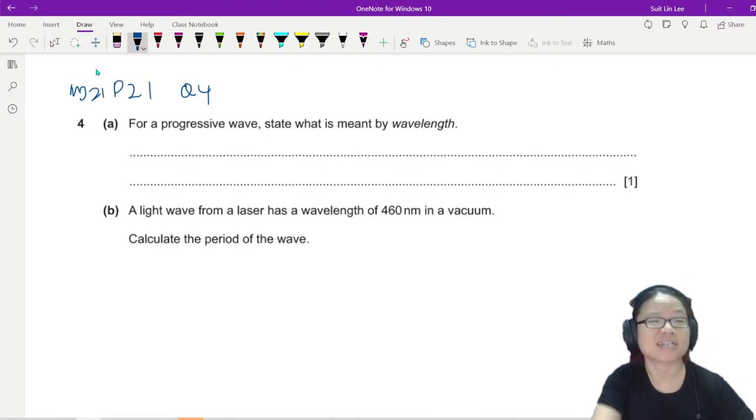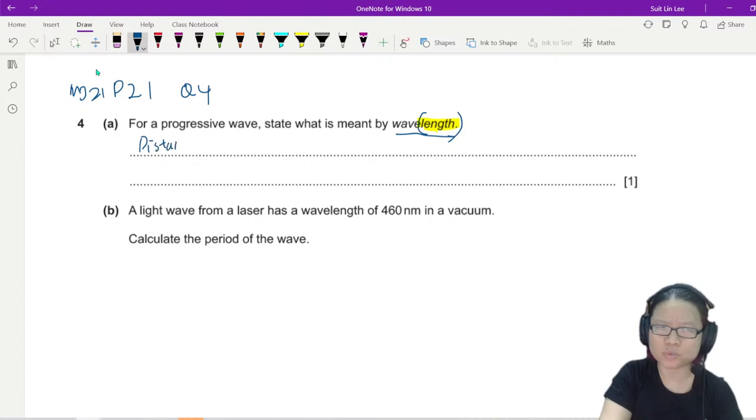Let's answer a question for progressive waves. State what is meant by wavelength. Wavelength is distance - you see the word length, so it confirms it's distance, right? It cannot be mass or time or current. This is distance - distance what? Distance between two adjacent points that are in phase.